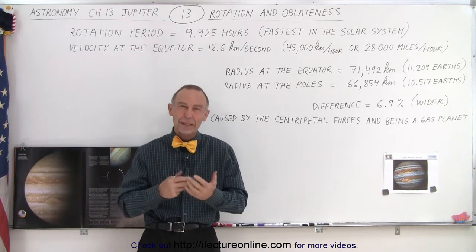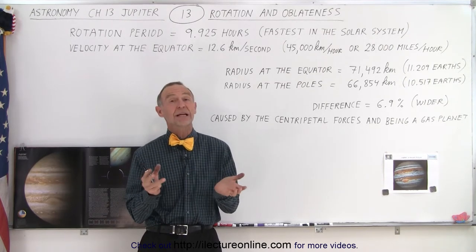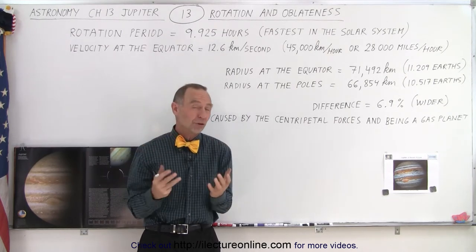It's also the biggest planet in the solar system, and it's a gas planet. That combination causes the shape of Jupiter to be really skewed, so to speak.